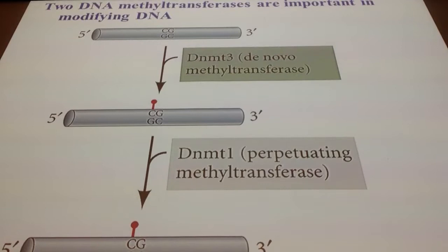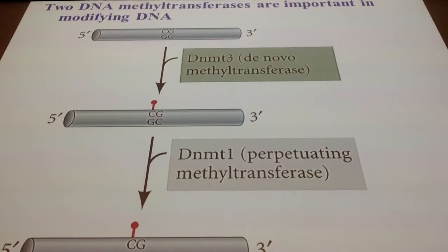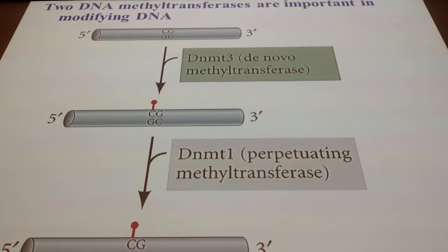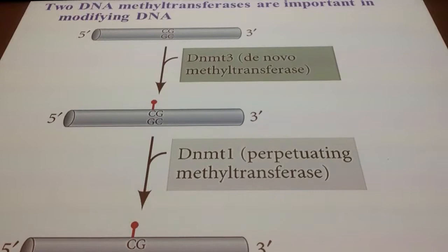The de novo methyltransferase correlates with change in the pattern of gene expression in you — it has nothing to do with memory. A stem cell that divides and differentiates would activate the de novo methyltransferase, not the perpetuating methyltransferase, unless the stem cell also wants the differentiated cell to remember that certain genes still have to be inactive. So memory is always perpetuating. Anything new — a change of pattern — is de novo.